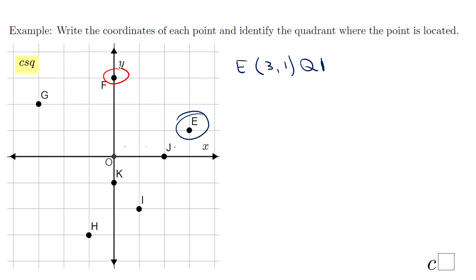Point F is on the y-axis. From the origin, I move just three units up, so the x-coordinate is zero and the y-coordinate is three.